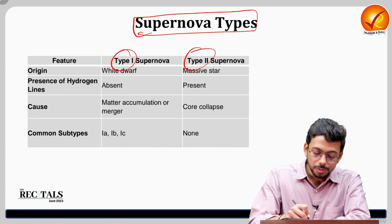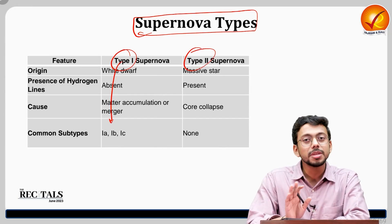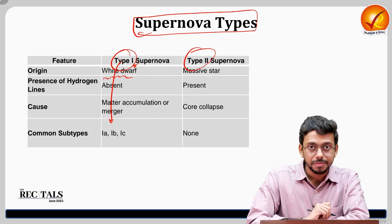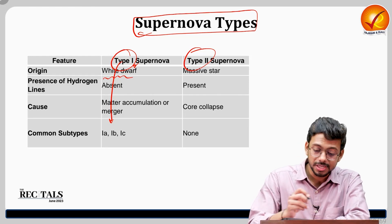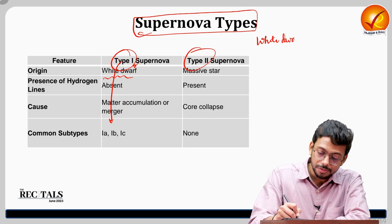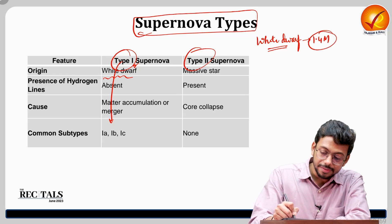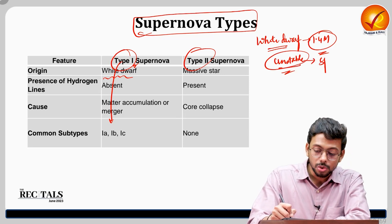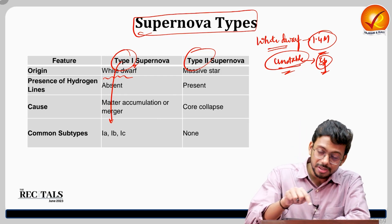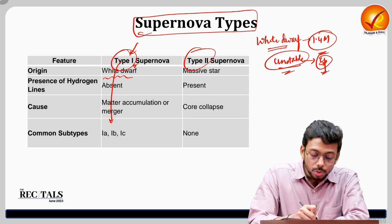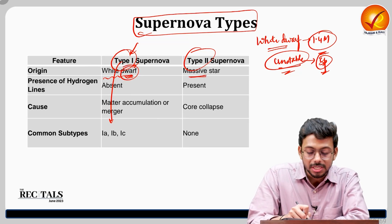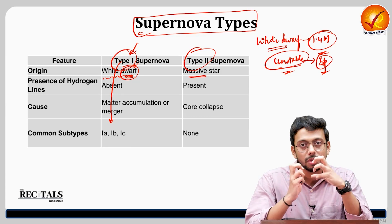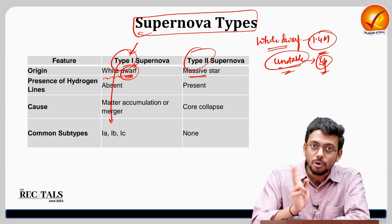There are two broad types of supernova: Type 1 and Type 2. The basic difference is where they originate. Type 1 originates from a white dwarf — when a white dwarf goes beyond 1.4–1.5 solar masses it becomes unstable and may go through supernova explosion, as discussed previously. Type 2 comes from a massive star, where the core collapses due to huge mass accumulating in a small volume, causing explosion. They have different forms and mechanisms of explosion.